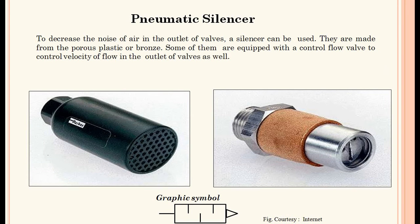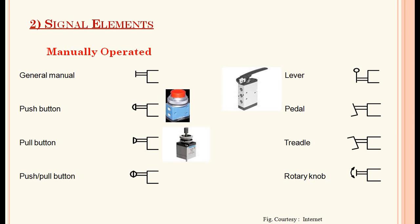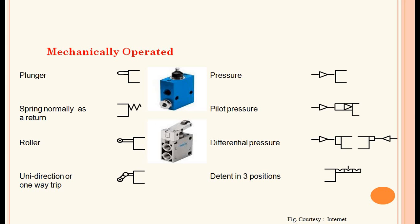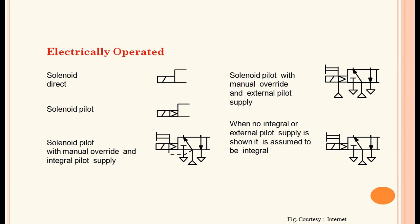Pneumatic silencer: to decrease the noise of air at the outlet of valves, a silencer is used. They are made from porous plastic or bronze, and some are equipped with a flow control valve to control the velocity of flow at the outlet. Photos and graphical symbols are shown. Signal elements include manually operated types — general manual, push button, pull button, push-pull button, levers, pedals, treadle, and rotary knob — as well as plungers, rollers, pilots, differential pressure types, and electrically operated solenoid valves including direct solenoid, pilot solenoid, and pilot solenoid with manual override.